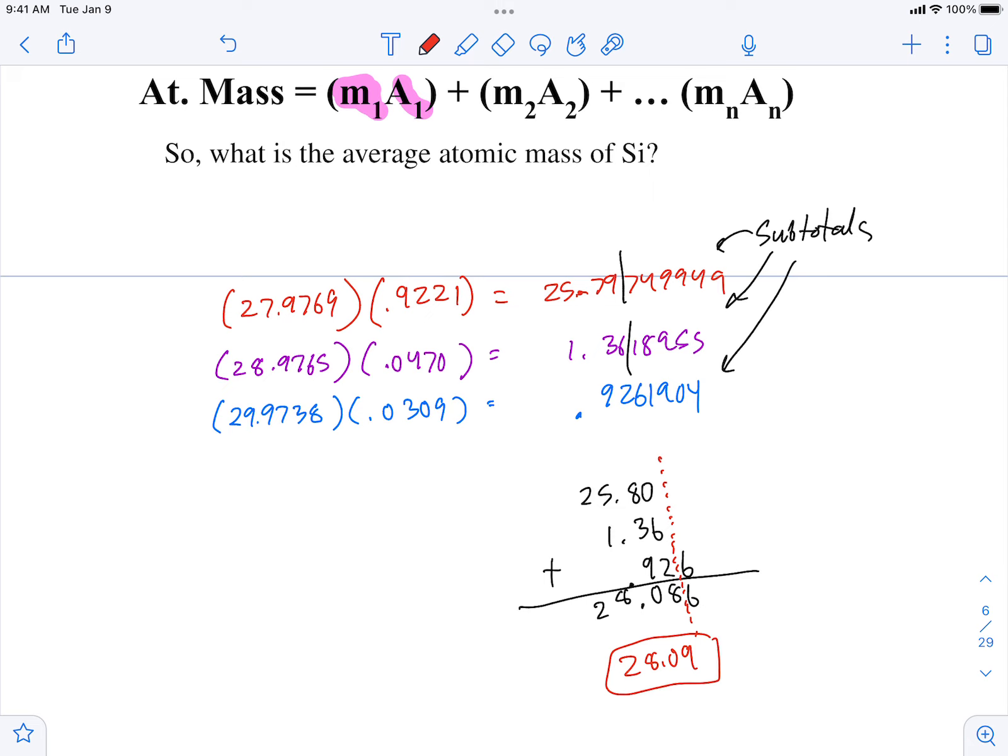So 28.09. Find silicon on your periodic table. What's the atomic mass? Okay. This is how that number was determined. This calculation was carried out for each of these elements, and that's why the number on your periodic table for the atomic mass is a decimal value.